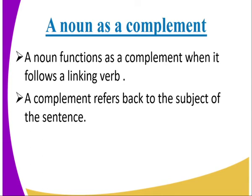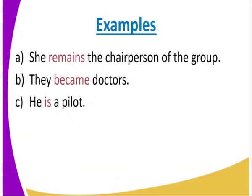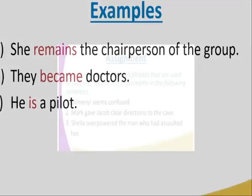A noun functions as a complement when it follows the linking verb. A complement refers back to the subject of the sentence. Examples: She remains the chairperson of the group. They became doctors. He is a pilot. These words involved are the complementary words.